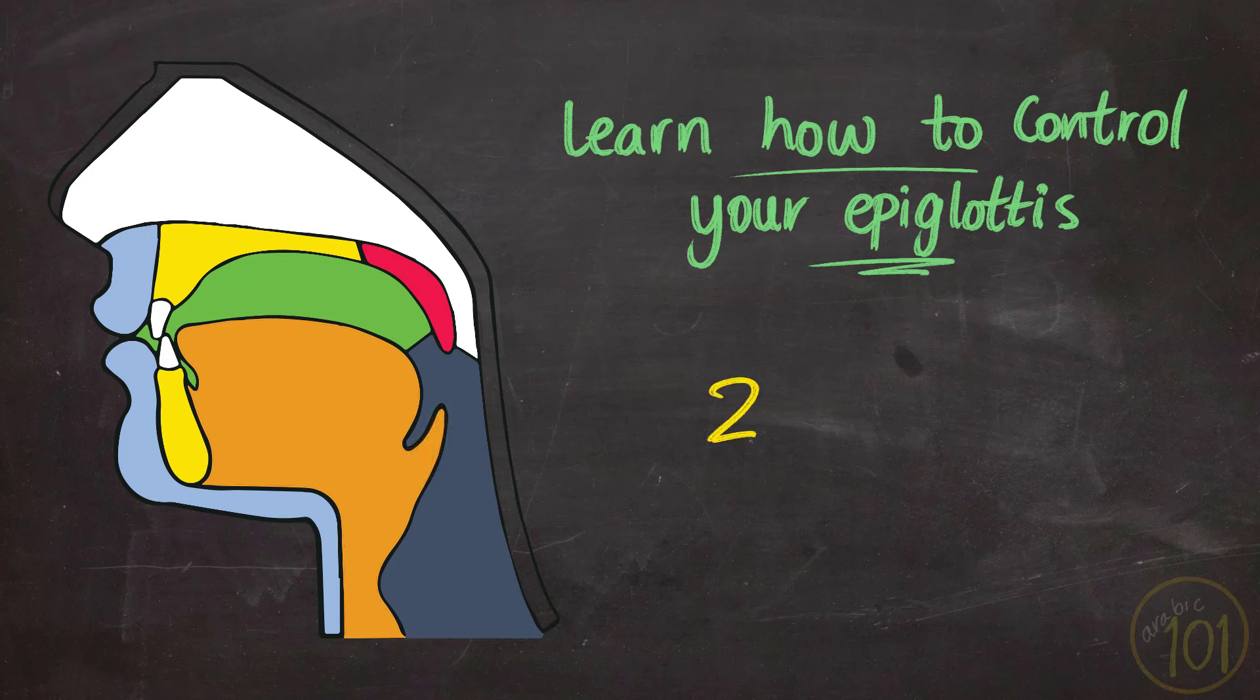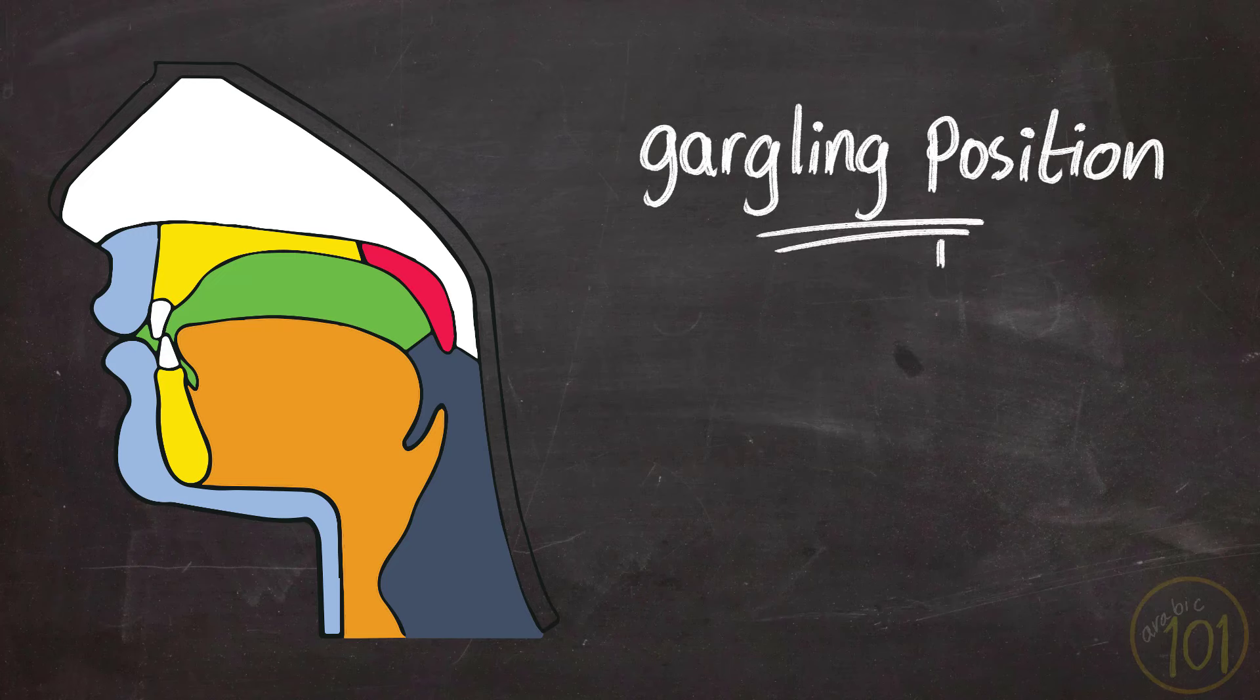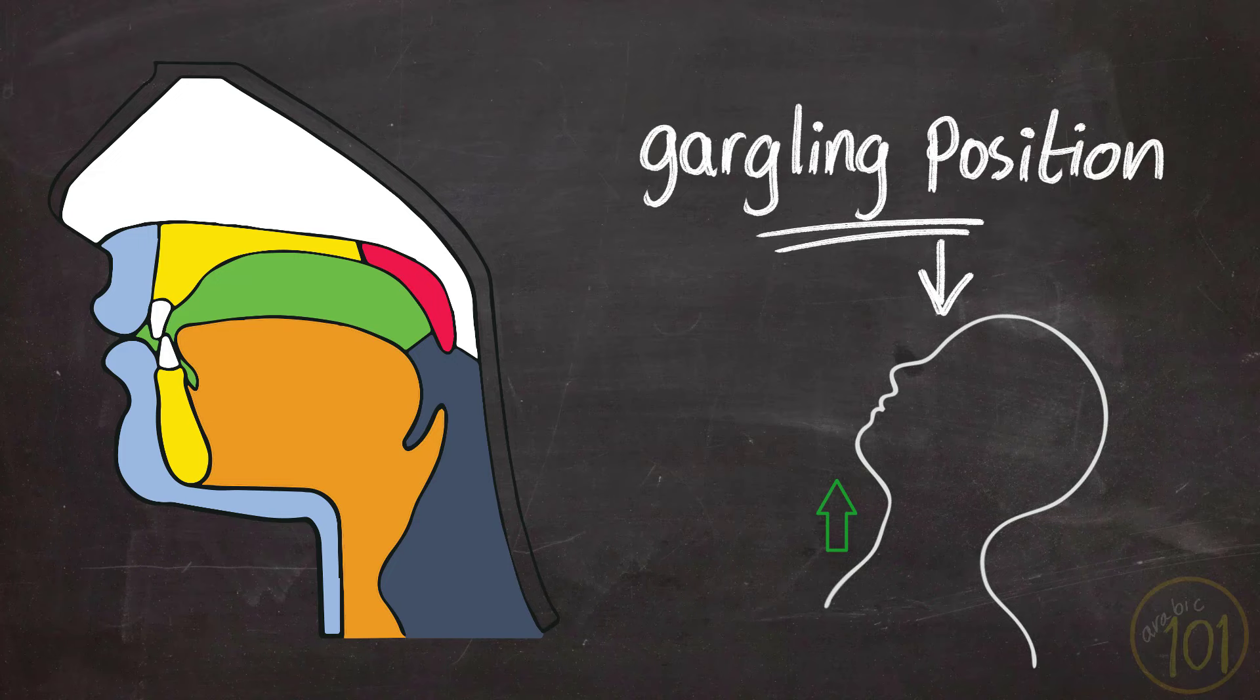Here are two tricks you can try to help yourself have more control over your epiglottis. The first trick is to start by applying a gargling position. Because when your neck is in this position, it is easier to practice your Ayn and control your epiglottis. After that, you start with an A sound, a full mouth alif. And you keep pushing up that A sound until you feel it is not a vowel anymore, and you start hearing the proper Ayn.